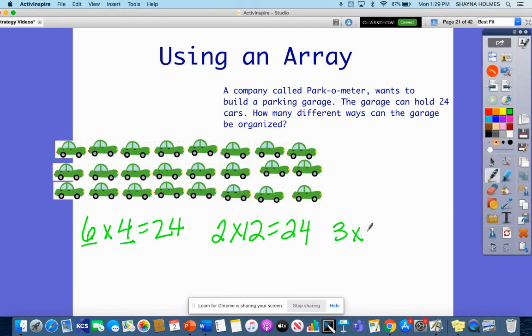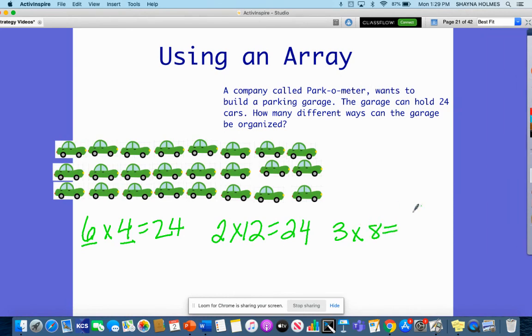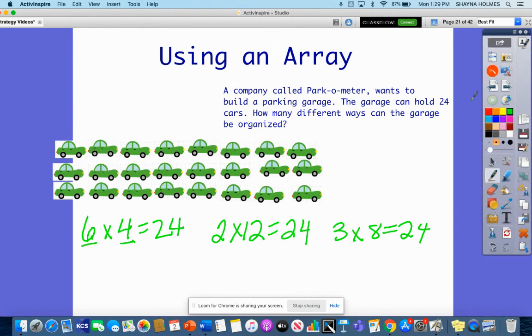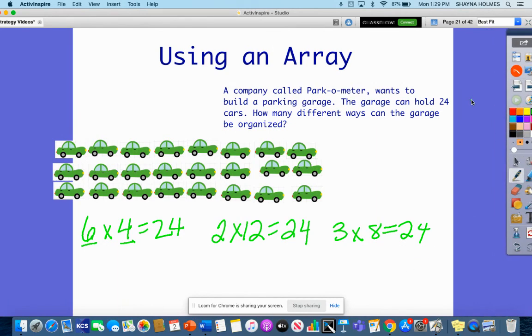So three and eight is a factor pair for 24. Three and eight are both factors of 24. That is the end of today's strategy video.